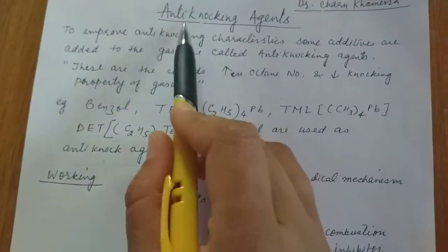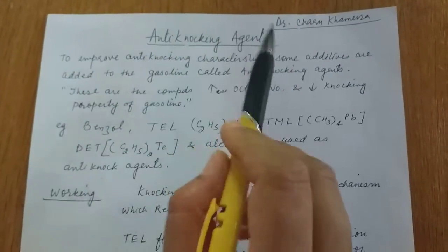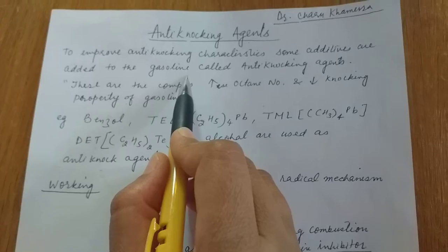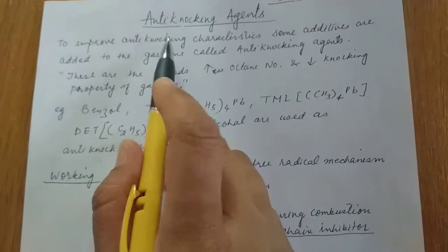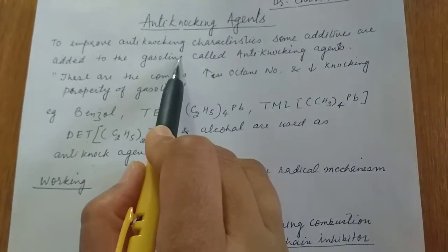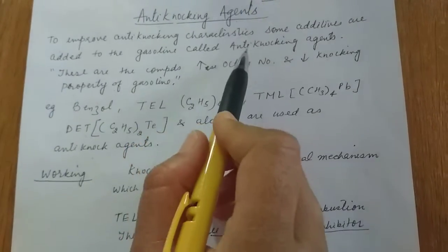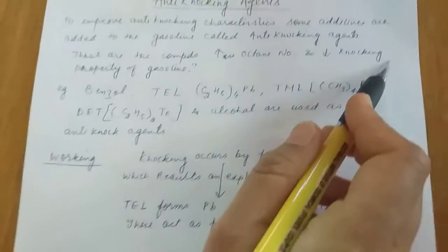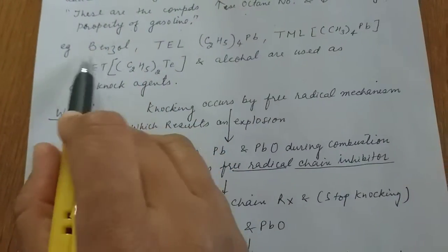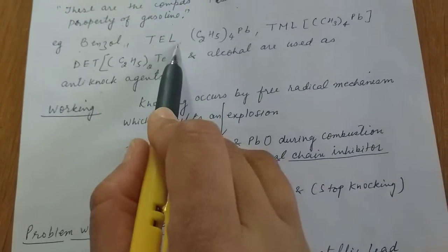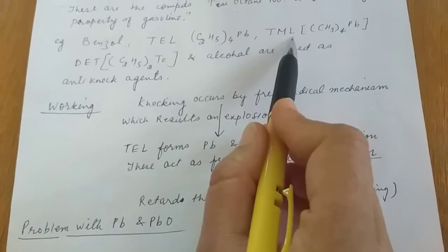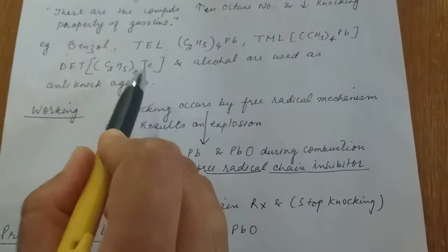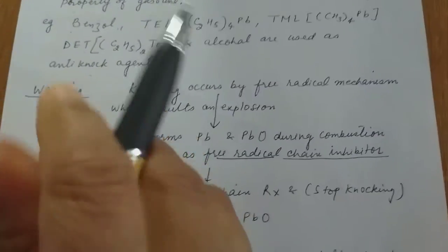To reduce knocking, some anti-knocking agents are used. Anti-knocking agents are used to improve anti-knocking characteristics. Some additives are added to gasoline. These are compounds which increase the octane number of gasoline and decrease the knocking property. Examples are benzoyl, TEL (tetraethyl lead), TML (tetramethyl lead), DET (diethyl tellurium), and alcohol are used as anti-knocking agents.